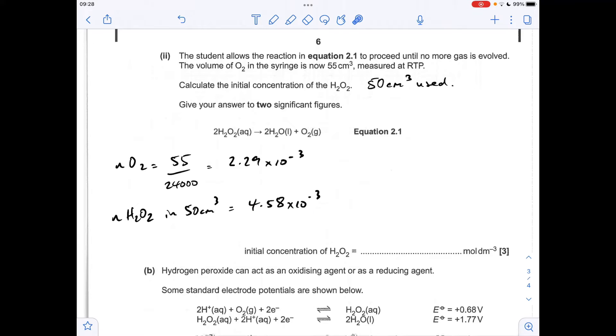So the concentration in moles per decimeter cubed is the moles divided by that volume, but in decimeters cubed. Which to two significant figures is 9.2 times 10 to the minus 2.